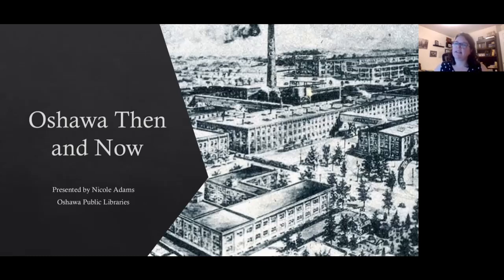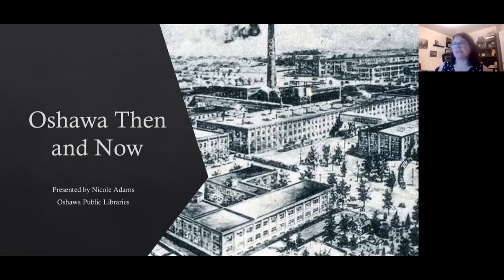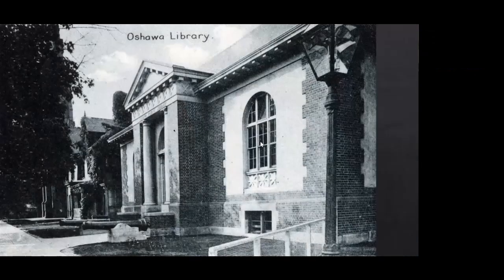The 'before' pictures are historic photographs. The 'after' pictures, because of the weather lately, are Google images — either Google Street View or Google Maps — to pinpoint where that picture is and what it looks like today, so sometimes those images will be a little grainy. I'll start off with a building that's near and dear to my heart: the Oshawa Library.